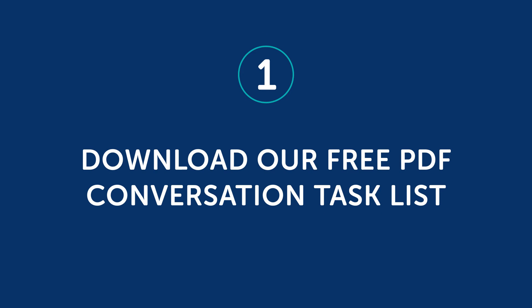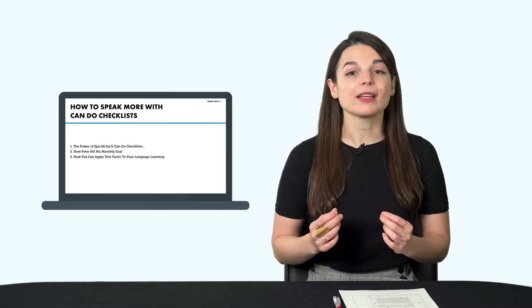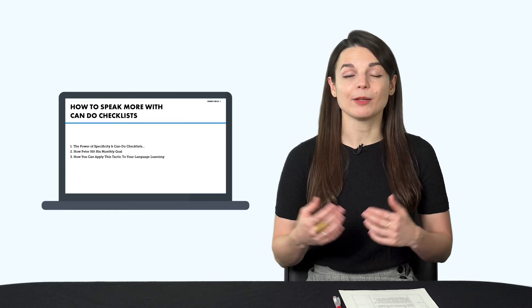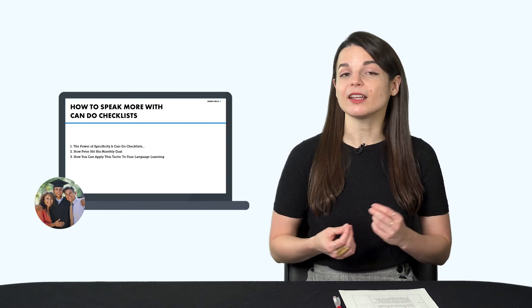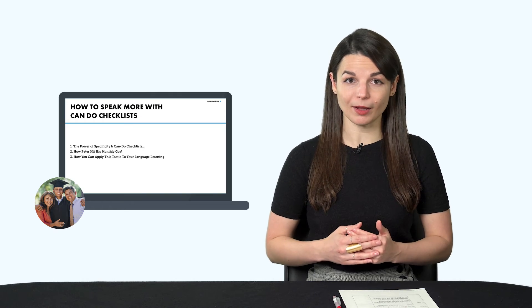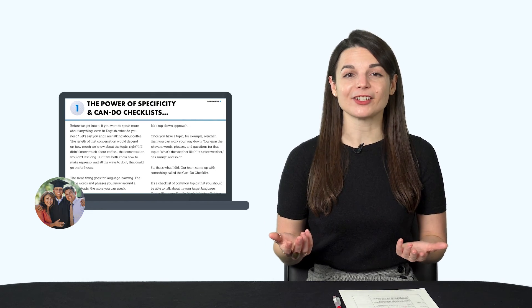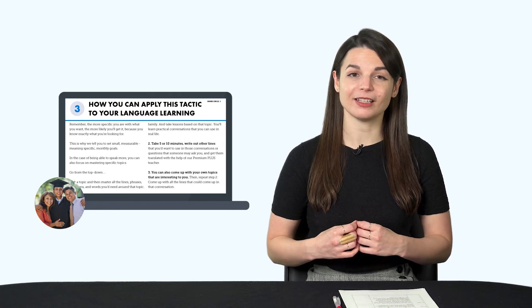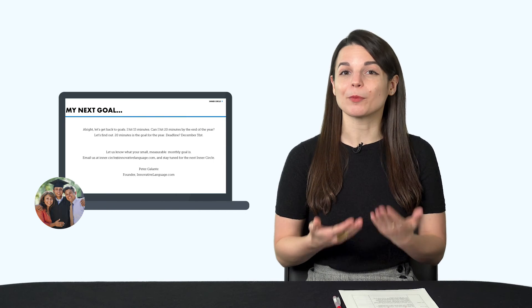Now, what kind of topics should you pick? That depends on you and your hobbies and interests. You can also start with common topics like talking about yourself, your family, the weather, or your weekend plans. To make it easy for you, here's what you can do. One, download our free PDF conversation task list. Pick a topic to start with — for example, talking about your family. Then take lessons inside our learning program based on that topic. You'll learn practical conversations you can use in real life, and as a result, you'll be able to talk more about your family.